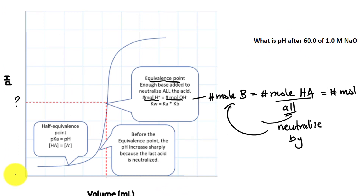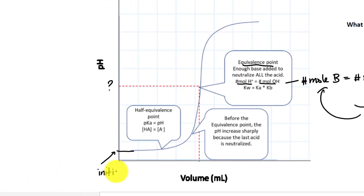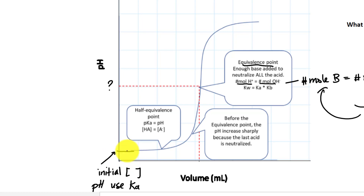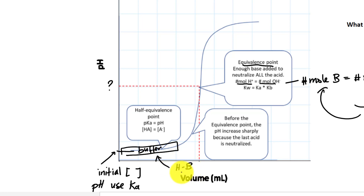One of the most challenging parts of titration is looking at the graph and figuring out how to solve for pH at different locations. At the very beginning, this is the initial concentration of the acid. At this initial point, the reaction has not occurred yet because we didn't add any base. To get the pH at the initial point, we have to use the Ka, because this is basically the dissociation of the acid. After we react with a base, this zone is considered the buffer zone, and when it comes to buffers, we can use the Henderson-Hasselbalch equation.